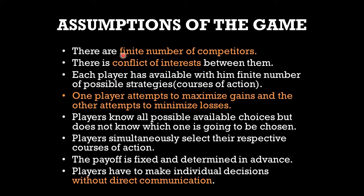The assumptions of game theory include: there are a finite number of competitors — not infinite. There is a conflict of interest between them; they are not acting in unison. Each player has a finite number of possible strategies. One player attempts to maximize gains while the other attempts to minimize losses. Players know all possible available choices but do not know which one the competitor will choose — creating tension because the other player might choose a strategy that reduces their profit.